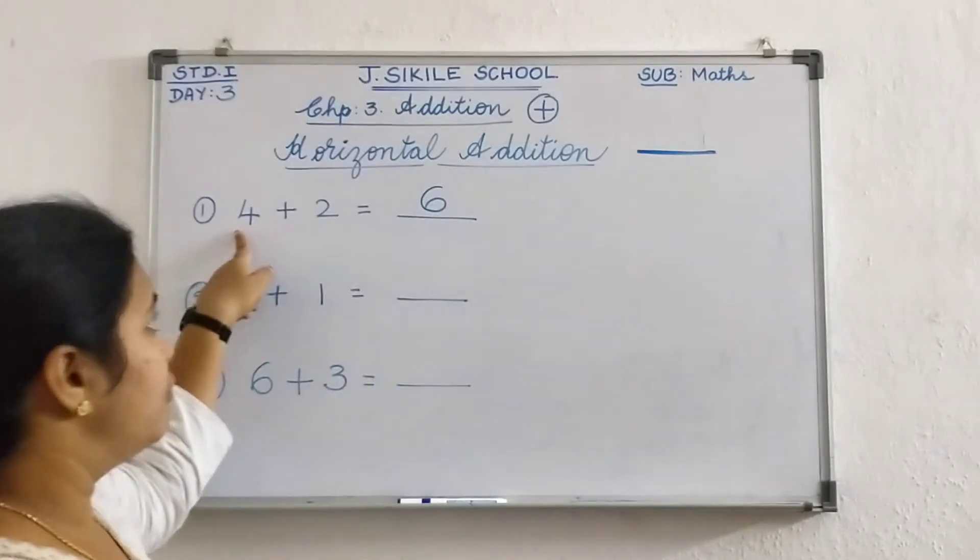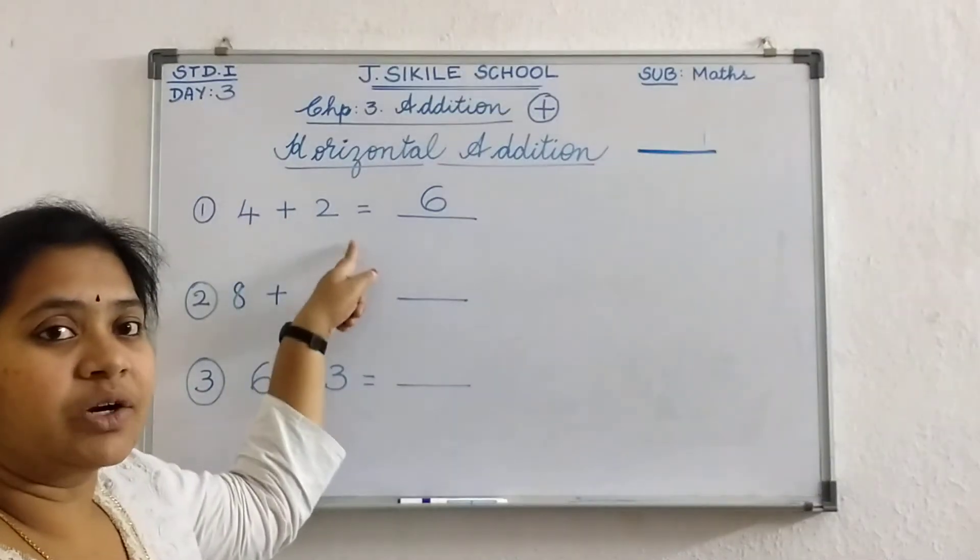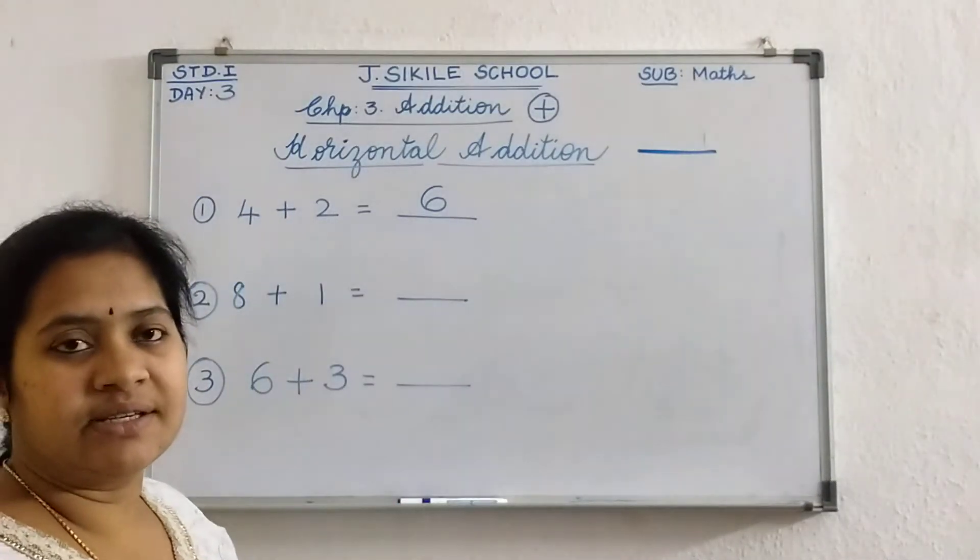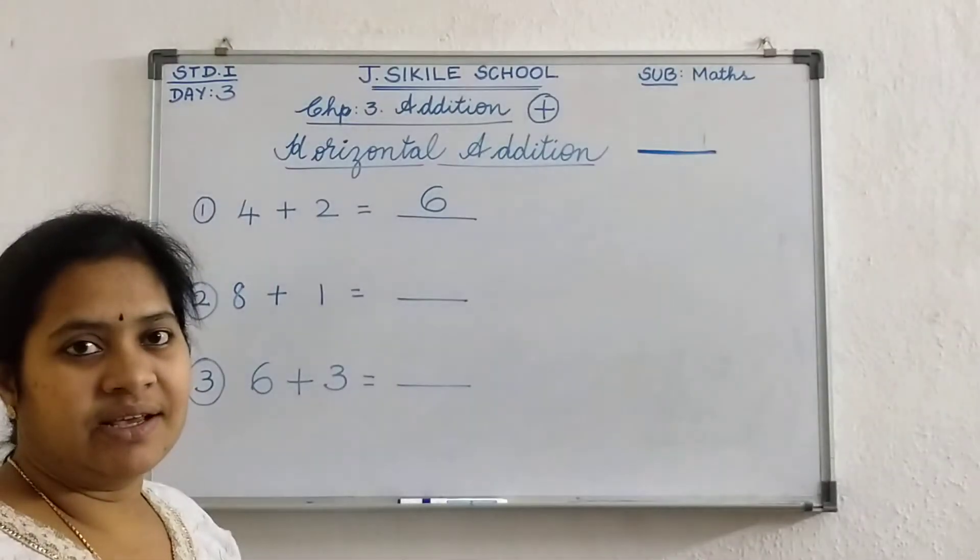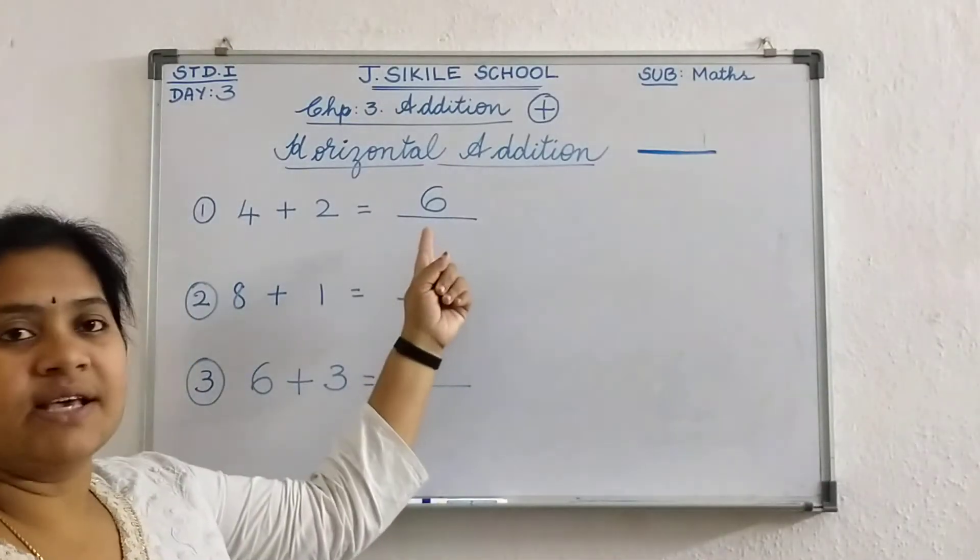And I told, I have already told the numbers which we are adding are called as addends. The numbers which we are adding are called as addends. Okay. The answer is called as sum.